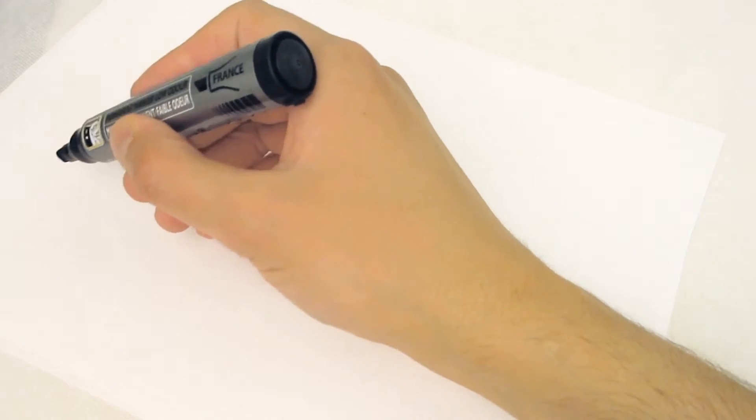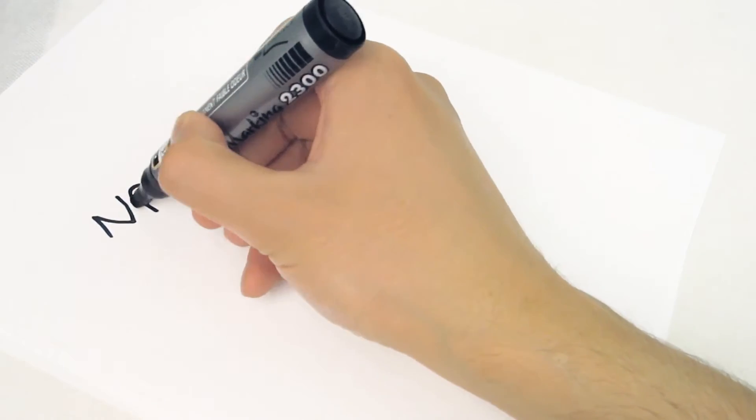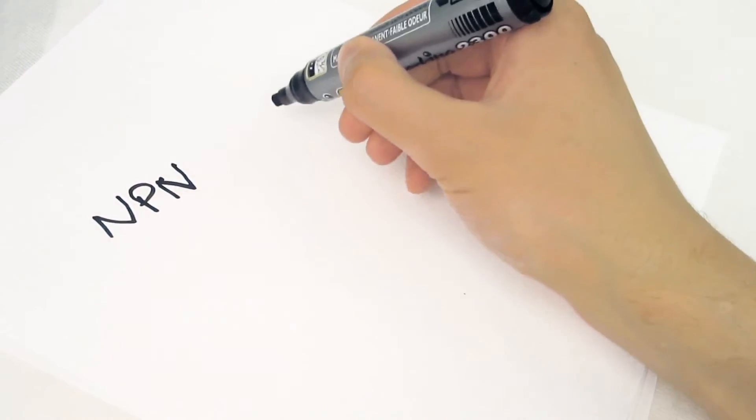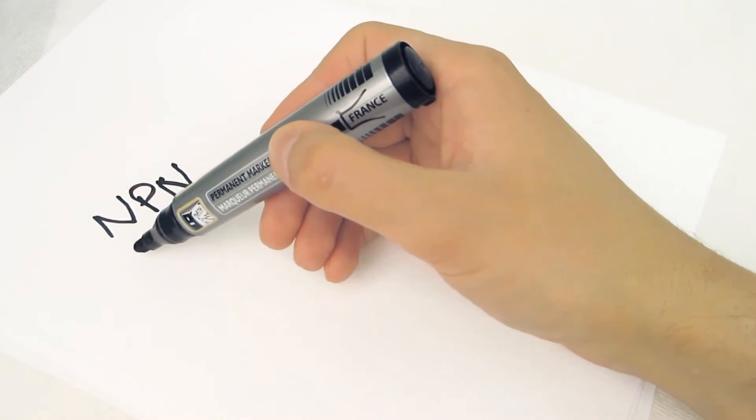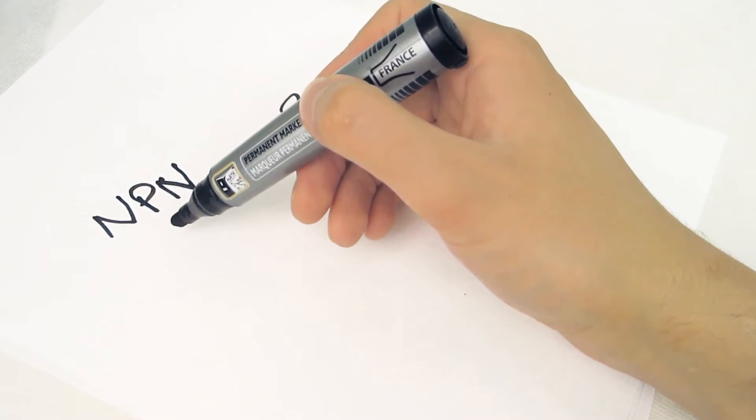Transistors can also be classified according to the way semiconductor material inside them is arranged. With BJTs we have NPN transistors and PNP transistors.